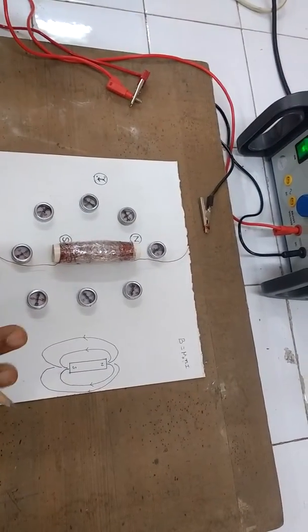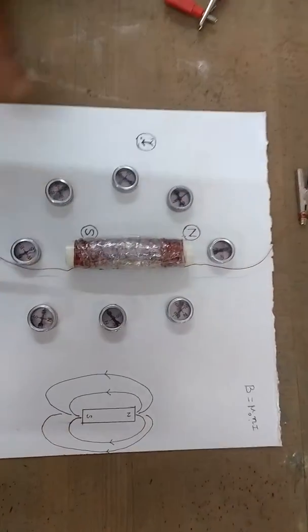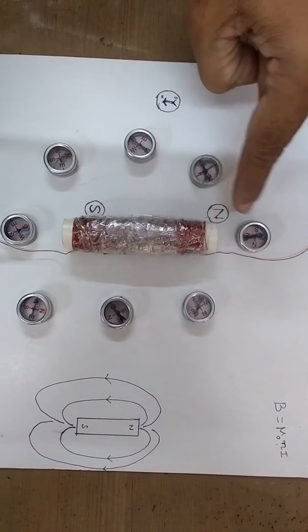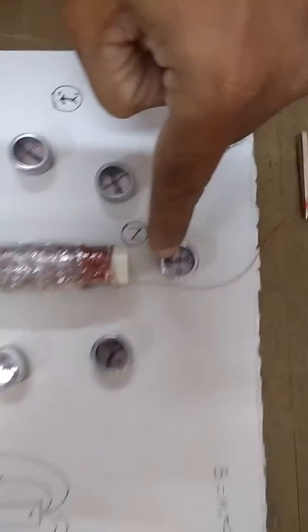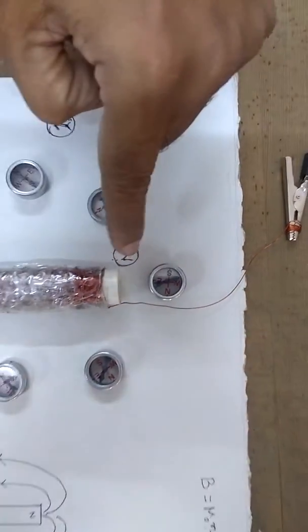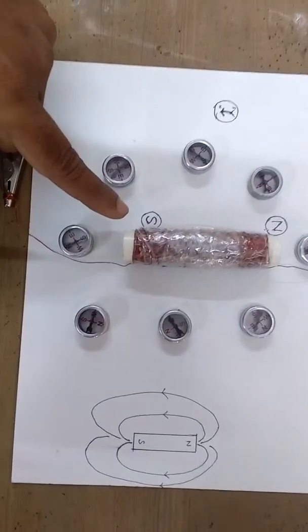Yes, all of them are showing deflection. That means there is magnetic field all around it. And this behaves like north pole because the south pole of the compass needle is being attracted towards this side. So this behaves like north end of the solenoid, and this behaves like south end.